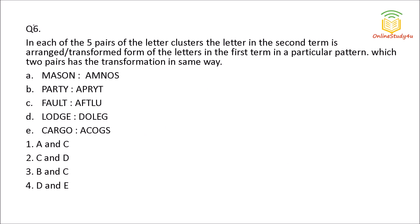Question number six: in each of the five letter clusters, the letters in the second term are a transformed arrangement of the letters in the first term in a particular pattern. Which two pairs have the transformation done in the same way? Note: when writing down this question there may have been some transcription error, so the concept is what matters here.